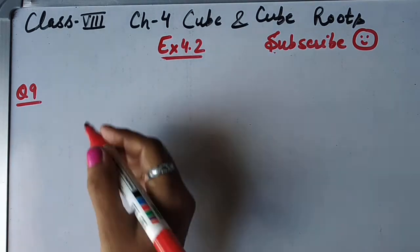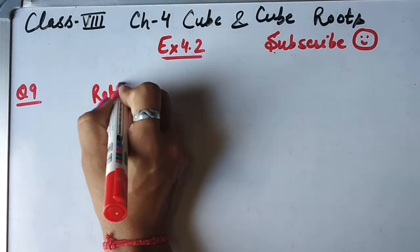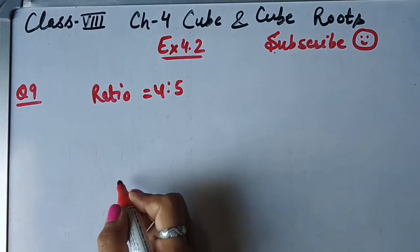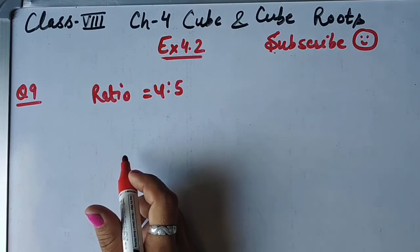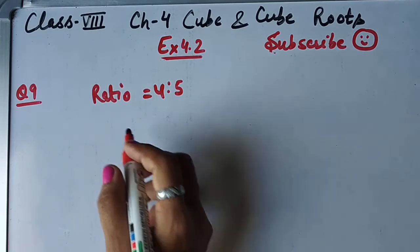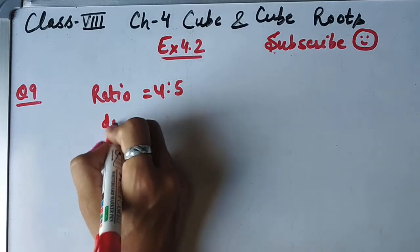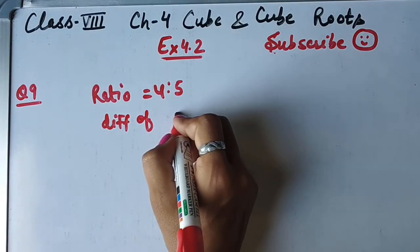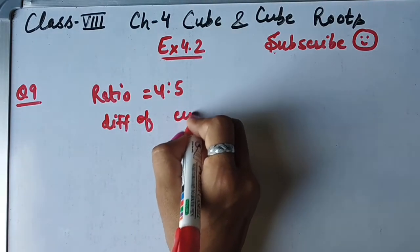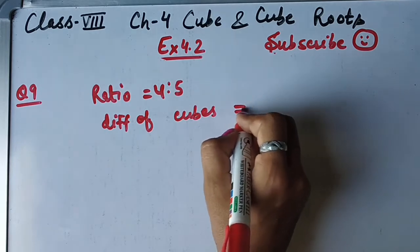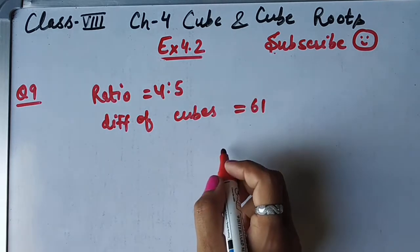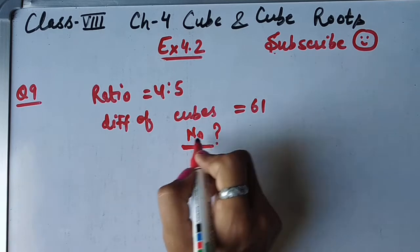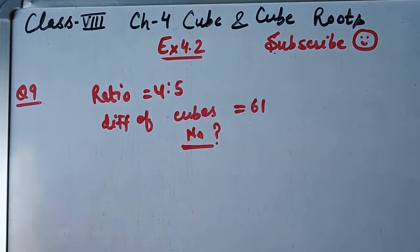Dekho, question mein kya de rakha hai — two numbers are in the ratio 4:5. Difference of their cubes is 61. Jo bhi given hai, as it is likh lete hain. Difference of cubes ka answer 61 hai. Find the numbers — hume numbers ko find out karna hai.